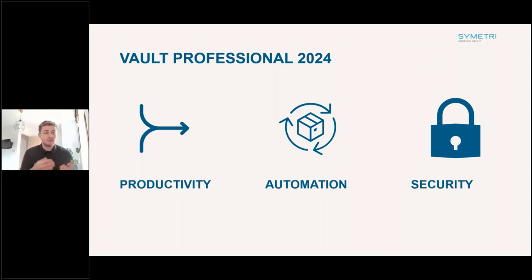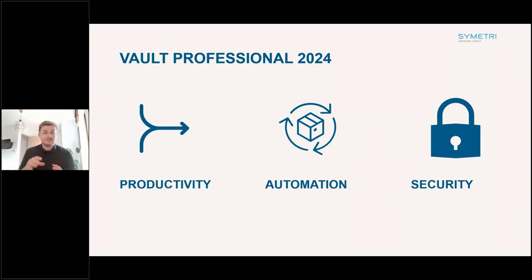Now we're going to take a look through the Vault side. Autodesk tend to focus on three key areas, and the main two for the 2024 Vault release are productivity and automation — stopping manually laborious tasks, automating proceedings, because designers want to spend time in Inventor and manufacturing rather than in Vault. They've also focused a little on security — the new backup methods and peer review phases they've introduced.